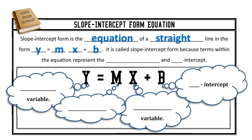It's called slope-intercept form because the terms within the equation represent the slope and y-intercept. Slope-intercept form, or y equals mx plus b, has four separate variables. The y represents the dependent variable — in a math class, the y will just remain a variable. m represents the slope.